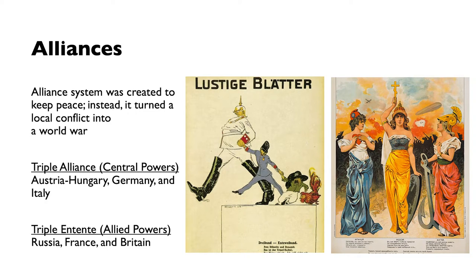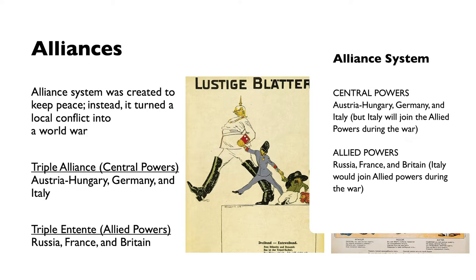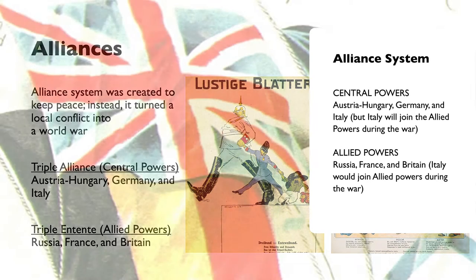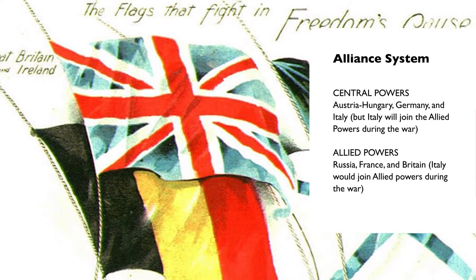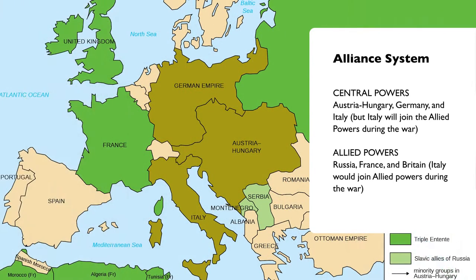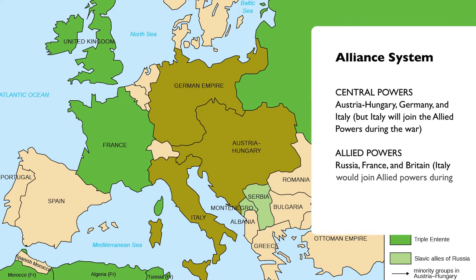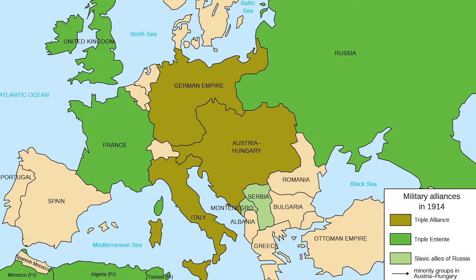The alliance system was supposed to keep the peace, but it made the war much worse. First there was the Triple Alliance, which became the Central Powers, and then the Triple Entente, which became the Allied Powers. The Triple Alliance was Austria-Hungary, Germany, and Italy, but Italy would later fight for the Allied Powers during the war. The Triple Entente — the Allied Powers — was Russia, France, and Britain. Looking at this map, the Triple Alliance is called the Central Powers during and after the war, historically.